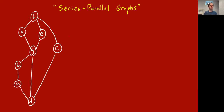Here is a nice running example of a series-parallel graph. You can see it has a piece that's like a four-cycle. How do you get a four-cycle? First take an edge, do a series connection to make a path of length two, do another series connection to get a path of length three, and then do a parallel connection with a single edge to get a cycle of length four.